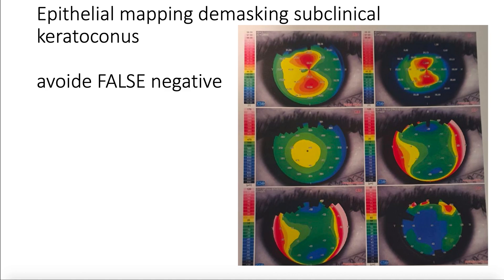In some cases, the keratoconus is minimal and the epithelium will try to hide it — and sometimes it succeeds. Such a case will show a normal anterior surface, but you will find a thinning at the apex, indicating a probable subclinical keratoconus. This would contraindicate keratorefractive surgery by LASIK and may be one of the cases that previously resulted in post-LASIK corneal ectasia because the epithelium was not studied.